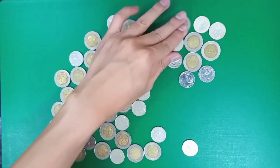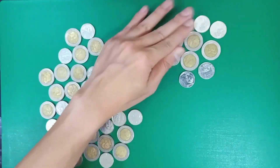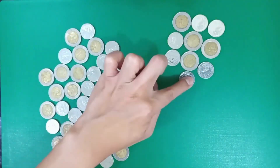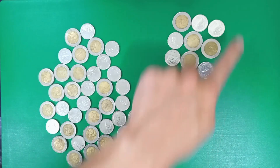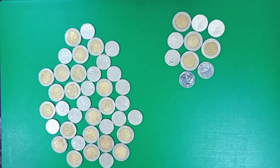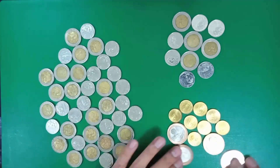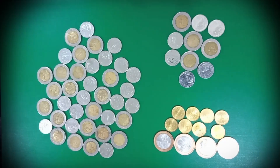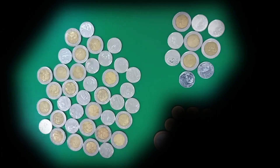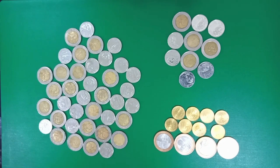Please view my other videos on the different sampling methods. These 10 are now our samples, or the actual sources of the data for our research. These 10 coins will then be the ones to receive our survey forms. And those are the basic definitions of population, sampling frame, sampling unit, and sample used in research. Like and subscribe for more research-related content.